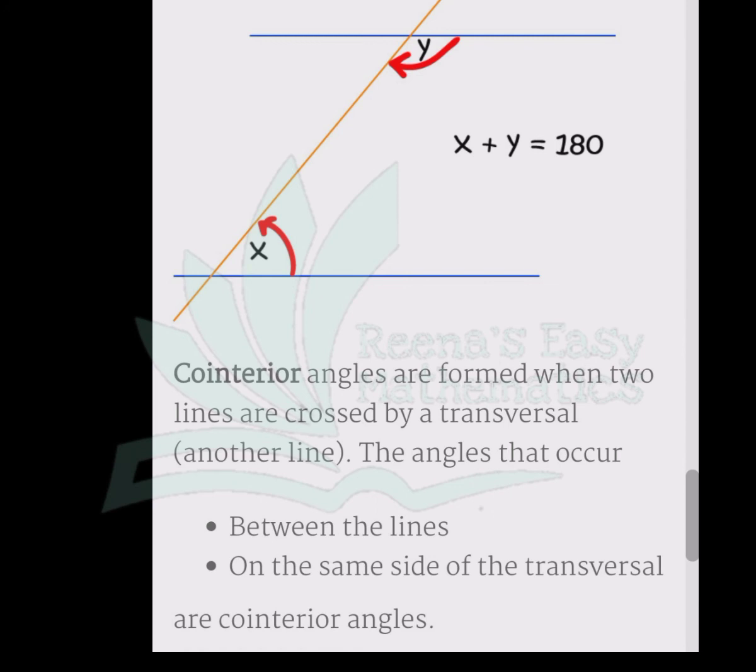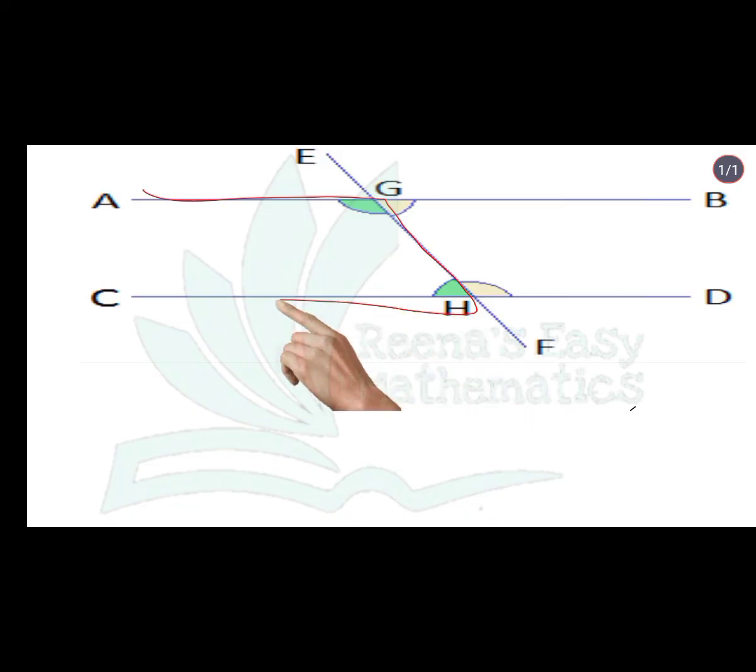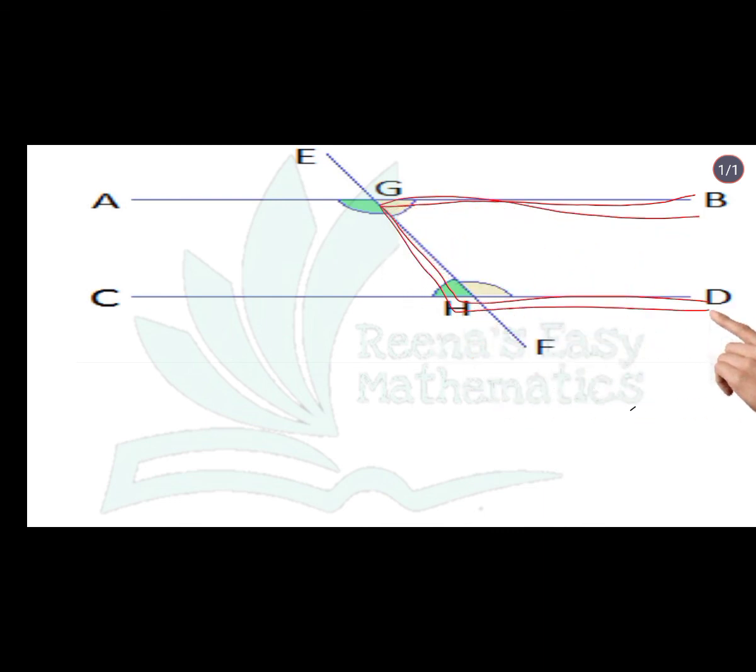Now come to co-interior angles which is indicating in the picture. This is our co-interior angles. Your digital C can be made in any direction, and the sum is 180 degrees. They are not equal to each other, but their sum is 180 degrees.